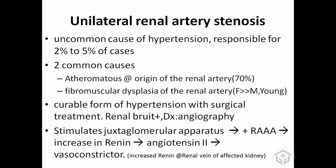Seventy percent of renal artery stenosis is due to an atheromatous plaque, similar to heart disease. There is another pathology in young females in their 20s and 30s — fibromuscular dysplasia (FMD) — which is smooth muscle dysplasia in the media, causing narrowing. In left renal artery stenosis, the left kidney gets less blood supply, stimulating the juxtaglomerular apparatus to release renin.